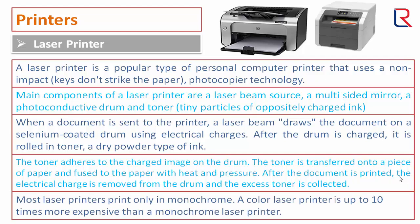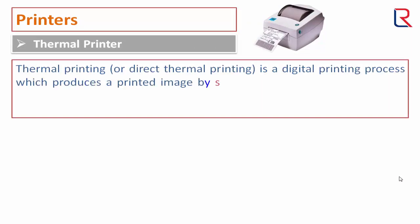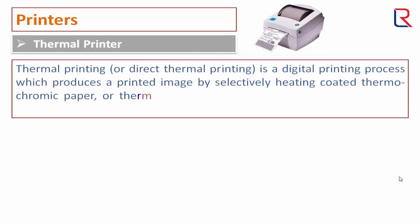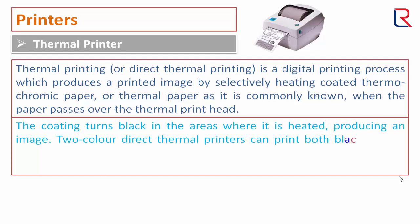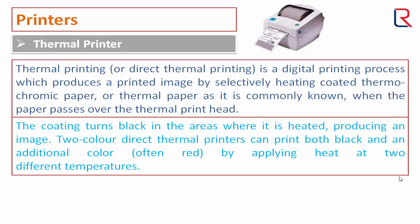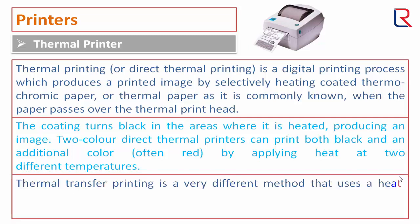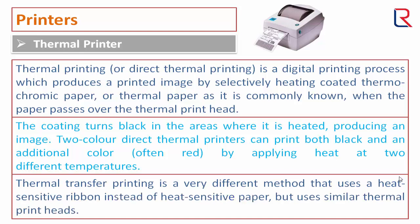Thermal printing is a digital printing process that produces a printed image by selectively heating coated thermochromic paper, commonly known as thermal paper. When the paper passes over the thermal print head, the coating turns black in the heated areas, producing an image. Two-color direct thermal printers can print both black and an additional color by applying heat at two different temperatures. Thermal transfer printing is a different method that uses a heat-sensitive ribbon instead of heat-sensitive paper, but uses similar thermal print heads.